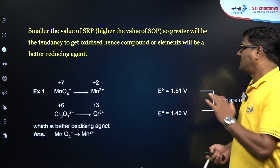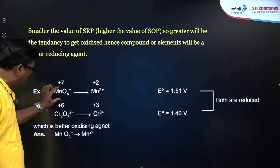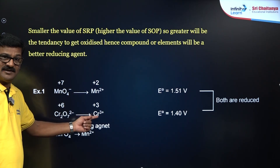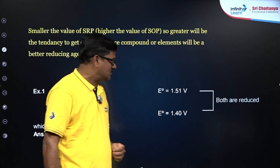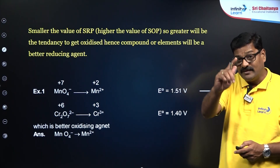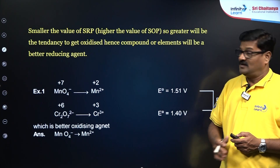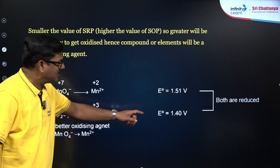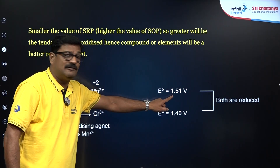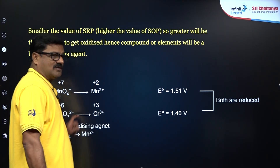That can be illustrated with this example. MnO4⁻ gives Mn²⁺, its SRP value is 1.51 volts. Cr2O7²⁻ (dichromate) gives Cr³⁺, its value is 1.4 volts — both are reduced. You will be asked: which is the better oxidizing agent? The one with the mathematically bigger SRP value is going to be a better oxidizing agent.